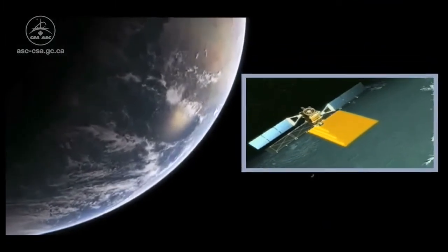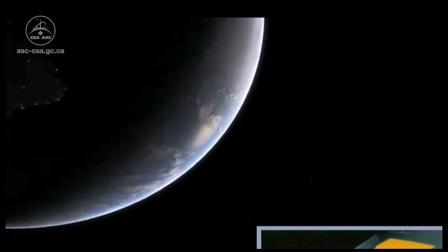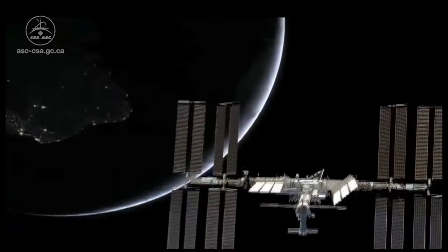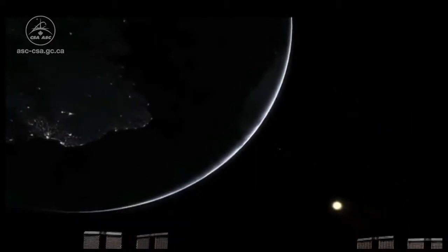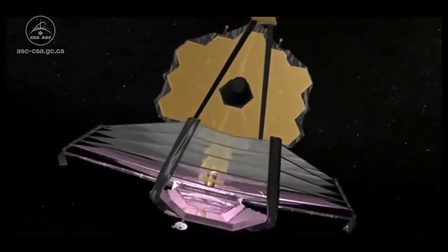Earth observation satellites help to monitor the health of the Earth. Large research laboratories on the International Space Station allow us to conduct experiments in human health. Satellites and orbiting observatories allow us to explore our solar system, giving us a better understanding of our planet and the universe beyond.